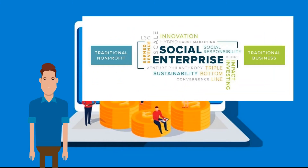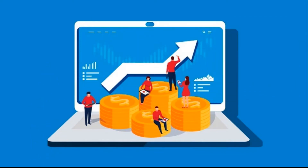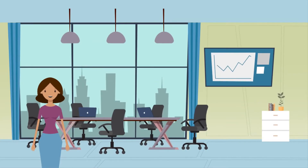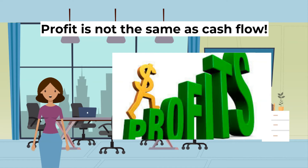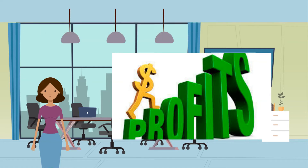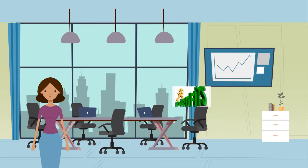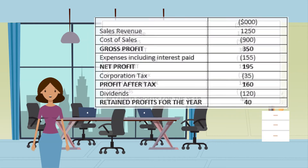For social enterprises, profit is not one of their primary objectives — the welfare of society is. However, they will also strive to make some profit to reinvest it back into the business and help it grow. Importantly, profit is not the same as cash flow. Profit is the surplus after total costs have been deducted from sales and includes all income and payments incurred in the year whether received or paid yet or not. In a cash flow, only those elements paid in cash immediately are considered.